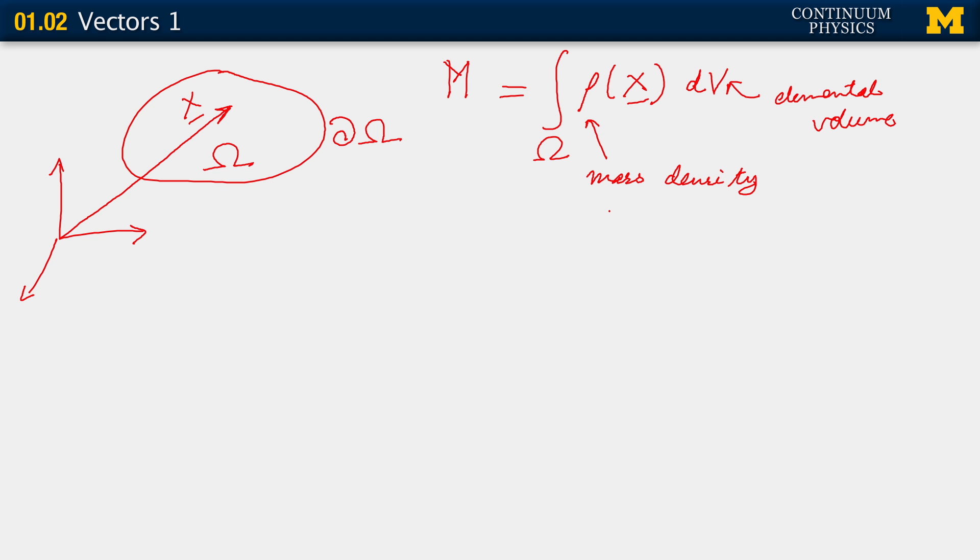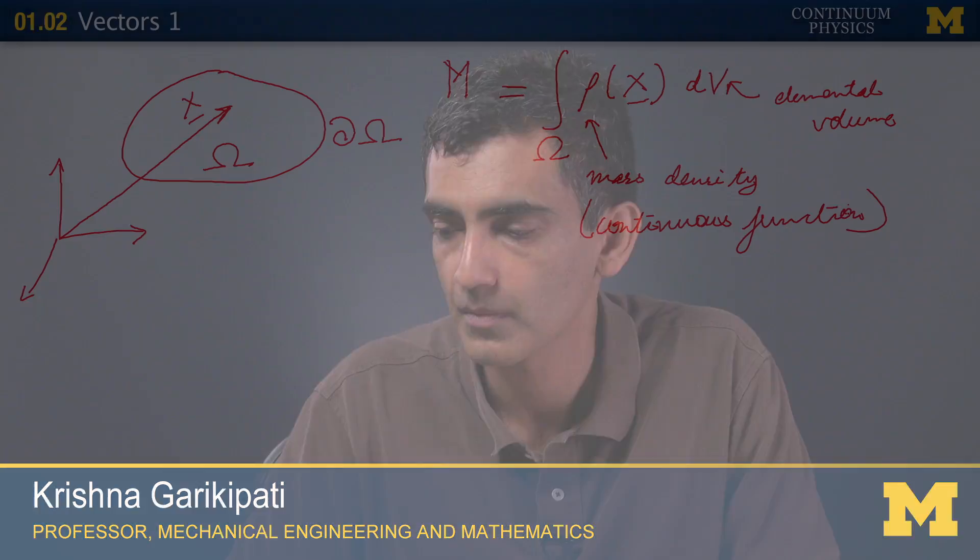Now importantly, the mass density in our continuum physics description is a continuous function. It is a continuous function. Of course, it's a continuous function of position. And so this is how we go from a discrete particle or atom-based representation of this fundamental physical quantity, the mass, to a continuous representation of it.